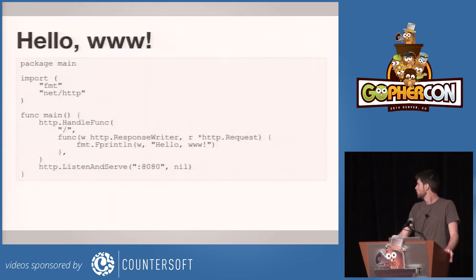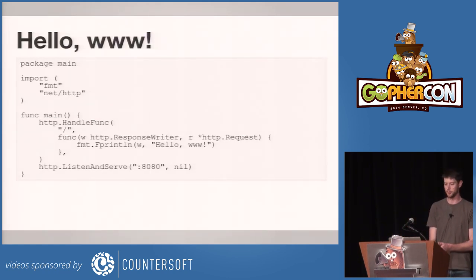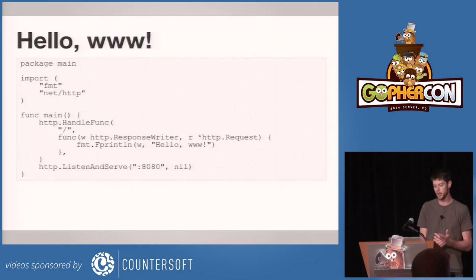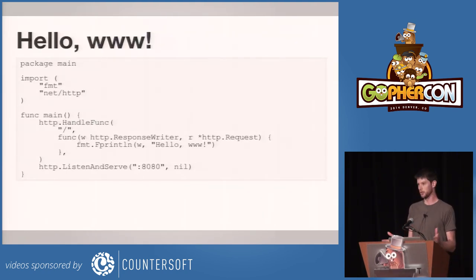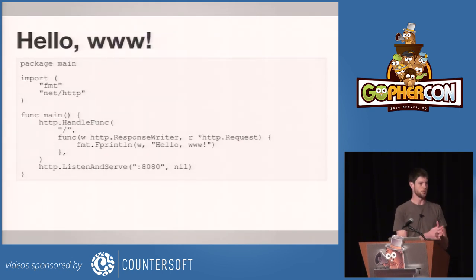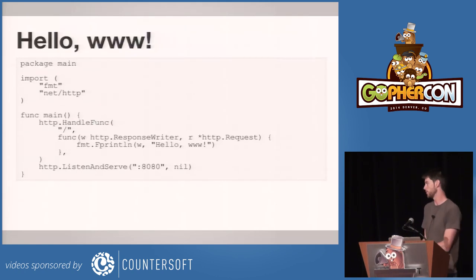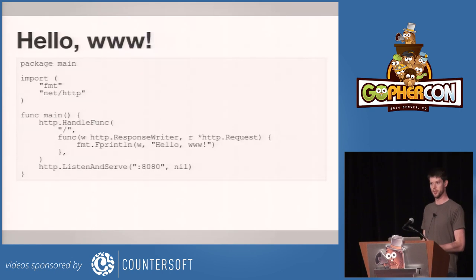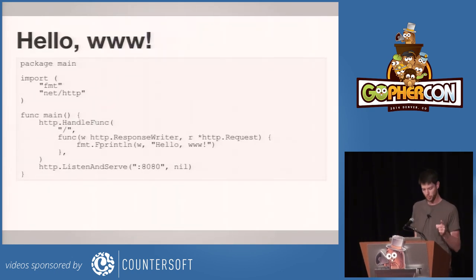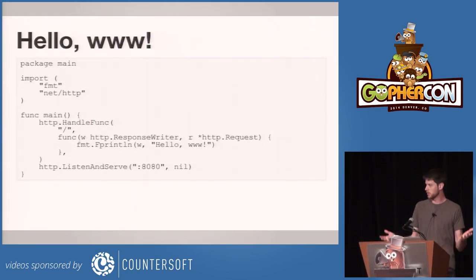So in Go, Rob handled every hello world example ever, so we're going to skip straight to hello www, where our main function sets up a handler for slash, the root URL. It gives it a function literal with the signature response writer and request pointer from the HTTP package. All it does is take that response writer and send hello www to it. We can see that implements the IO writer interface, which is important because we can pass it to fmt.Fprintln. So this listens on a port and is utterly boring in every other way.